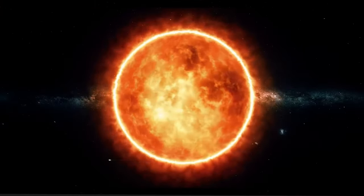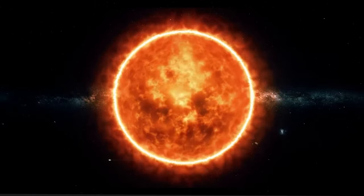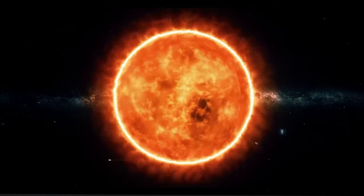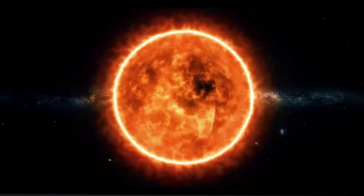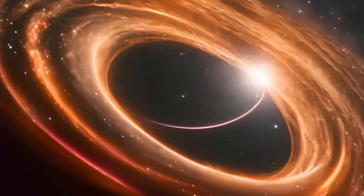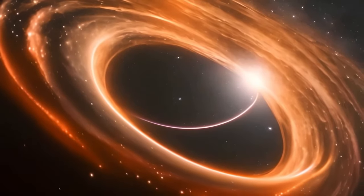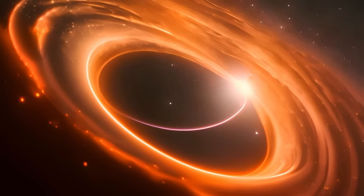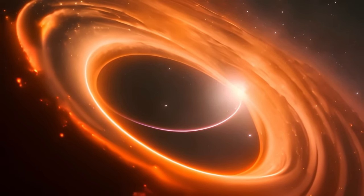The companion star could, for example, influence the outer layers of Betelgeuse through its gravity and thus alter the mass ejection or the dynamics of the supernova. And furthermore, the interaction between the two stars could also shift the exact timeline until the explosion by either drawing off material or promoting instabilities in the core of Betelgeuse. This means that the supernova could not only be spectacular, but also unique compared to stars without companions.